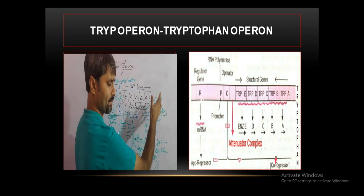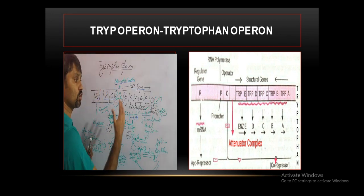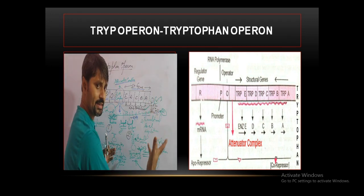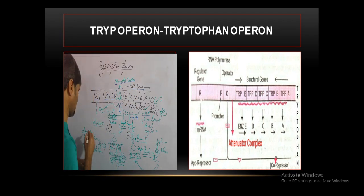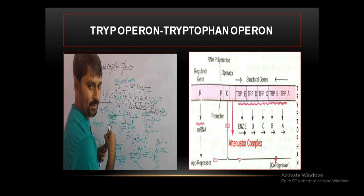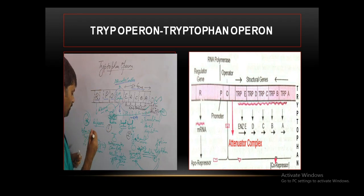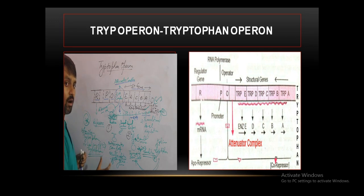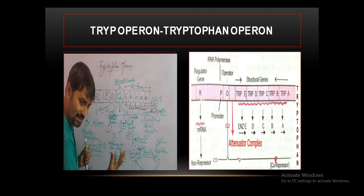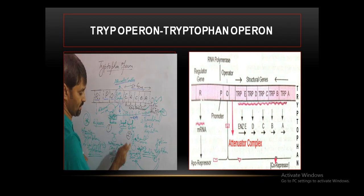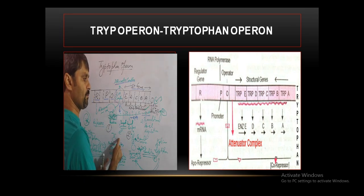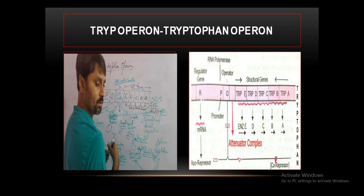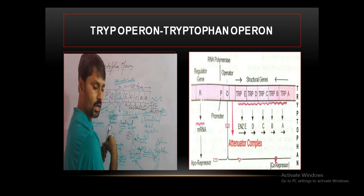So when there is no tryptophan or low concentration of tryptophan, the anti-terminator stem loop forms between segments two and three, and translation is switched on. The operon remains active, producing tryptophan. But when the concentration of tryptophan is high, the loop between segments three and four will form, stopping translation.